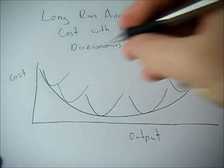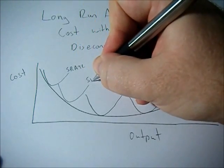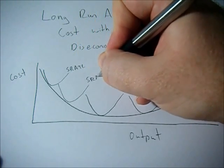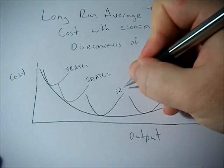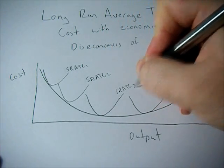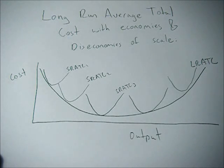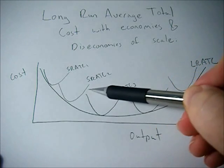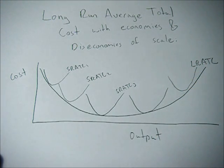There are an infinite number of these short run average total cost curves. As we change them by changing the fixed value of an input — say we make our factory bigger or buy more ovens, something we can't do in the short run but can do in the long run — we get this long run average total cost curve.